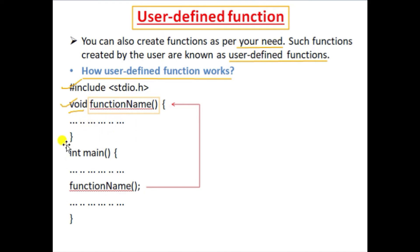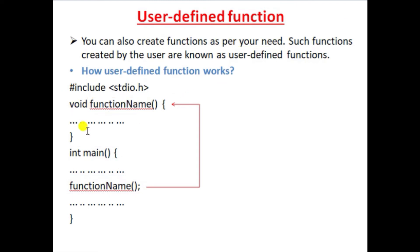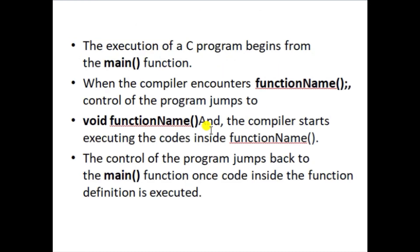Inside the main function, whenever we need to call the function, we just write the name of that function. It then jumps back to the function definition, performs the specific task, and returns the result inside the main function. I hope you understand the syntax of the user-defined function.